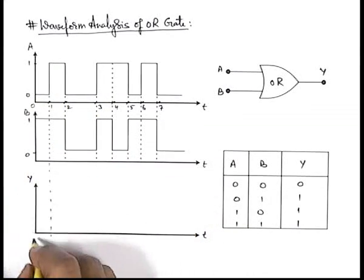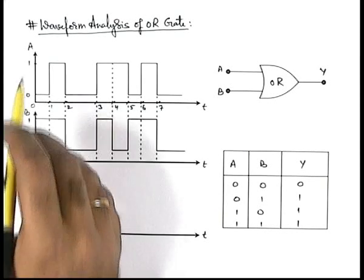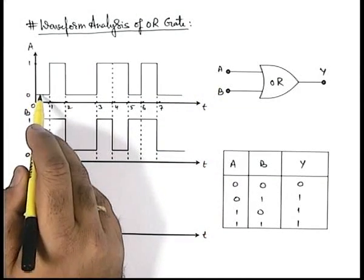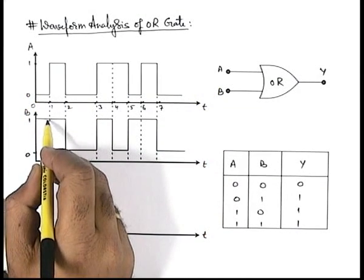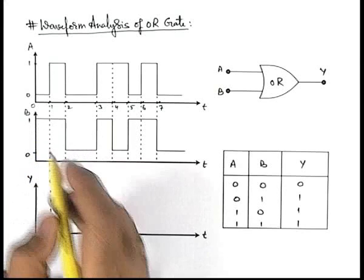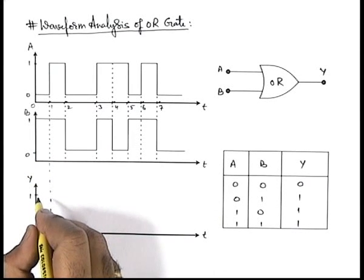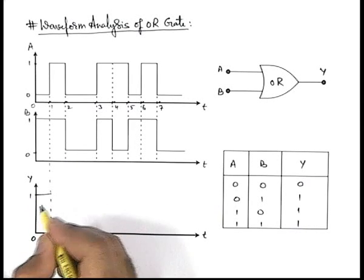So here you can see from zero to time instant t1, input terminal A is at state zero but B is at state one. So if either of the two is one, the state of Y will be at one only. So in this situation it will remain at one.